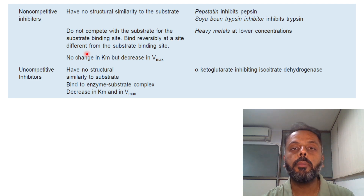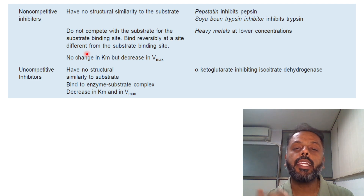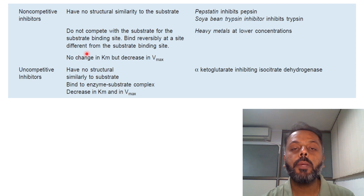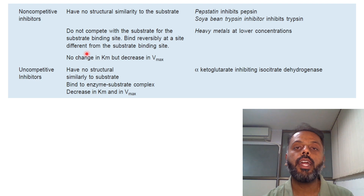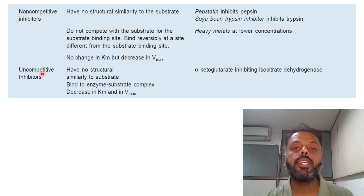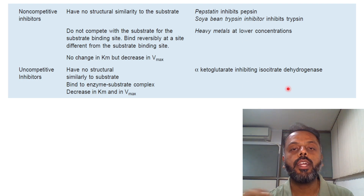Another reversible type of enzyme inhibition is uncompetitive inhibition. Uncompetitive inhibitors again have no structural similarity to the substrate. The inhibitor binds to the enzyme-substrate complex — remember, it binds to the enzyme-substrate complex — and there will be a decrease in both Vmax and KM value. One example of uncompetitive enzyme inhibition is alpha-ketoglutarate, which inhibits isocitrate dehydrogenase.